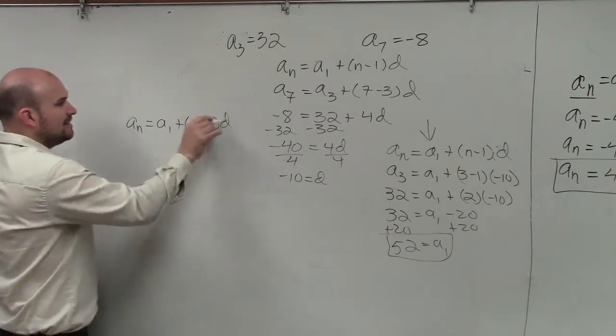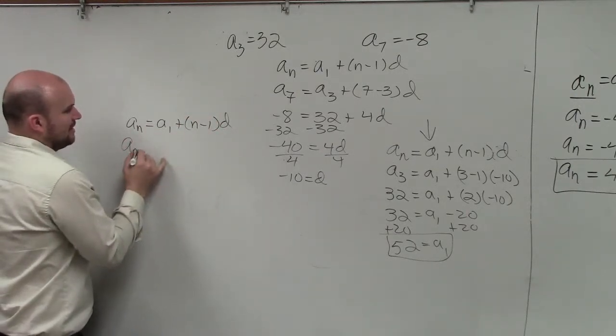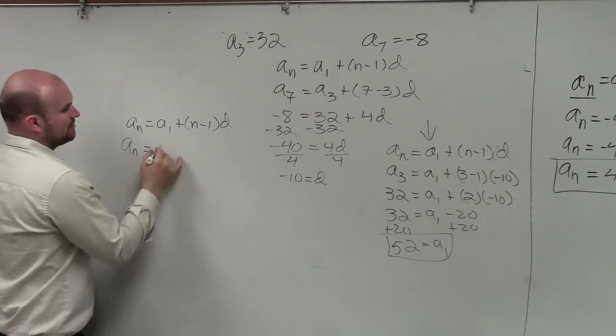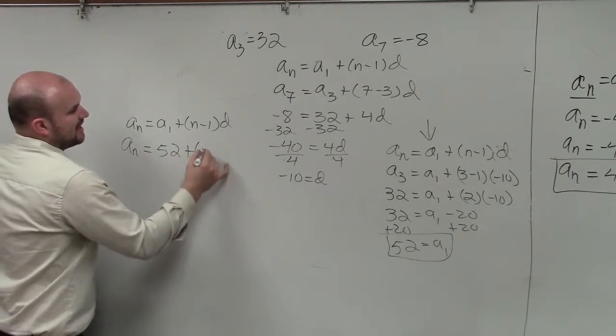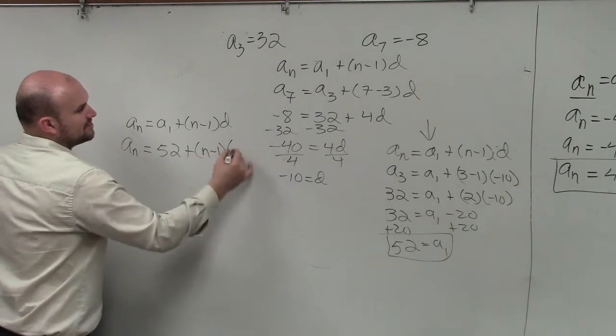But now, we know what d is, and we know what a sub 1 is. a sub n equals a sub 1, which is 52, plus n minus 1 times d, which is negative 10.